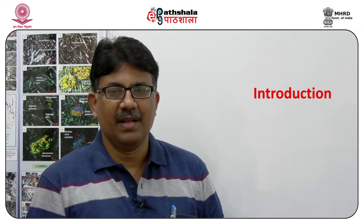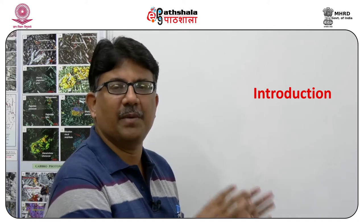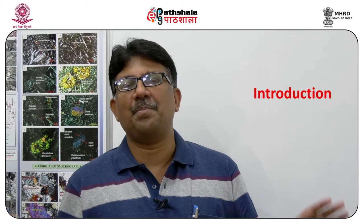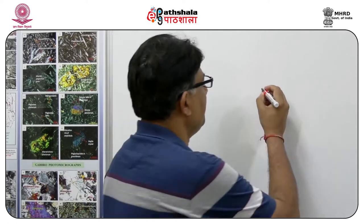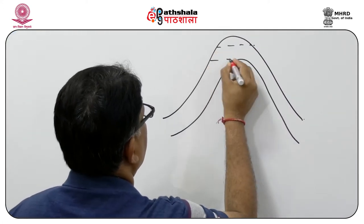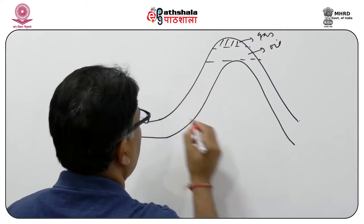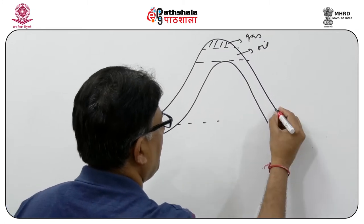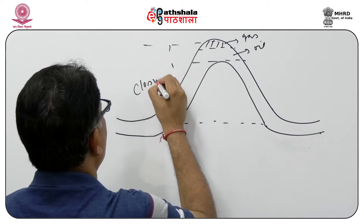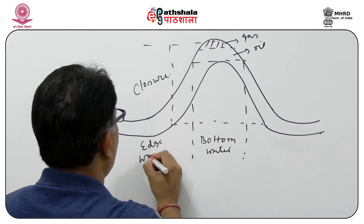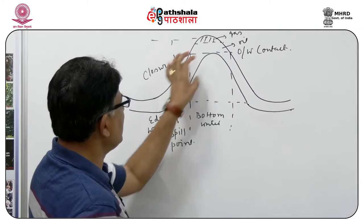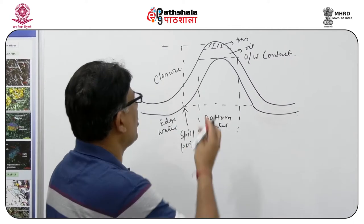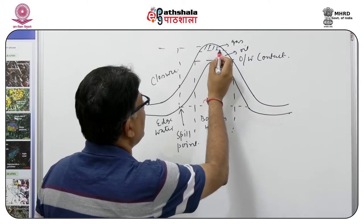How do we define the different parameters of a trap? I will explain in the form of a drawing on the board of an antiformal trap situation — when you have a closure of an antiform — and then define the different physical parameters of a trap. This is a very simple geometry of an antiformal trap where I can have a closure of the antiform, and you can see there is accumulation of gas and oil.